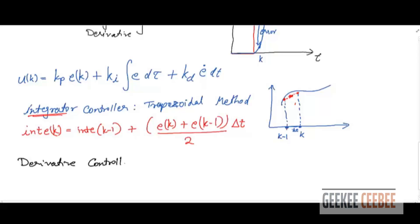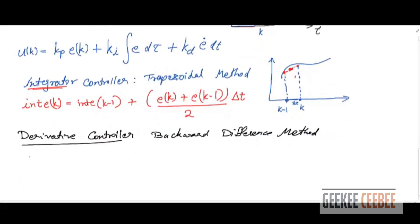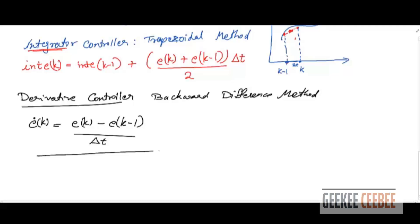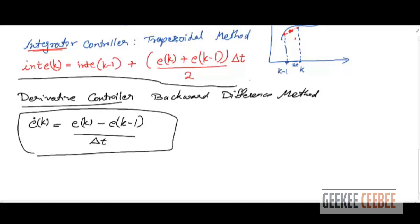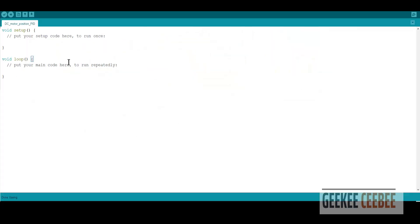For the derivative controller, we find the derivative of the error using the backward difference method — there's a full video on my channel about different difference methods. The derivative of the error is: (error(K) - error(K-1)) / delta_T. This integration equation and derivative equation are the formulations we'll use in the code. Let's start with the code now.